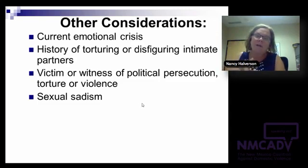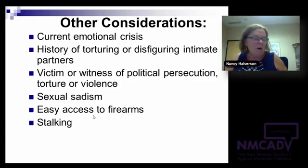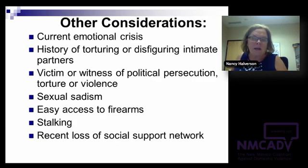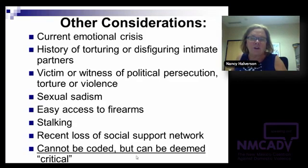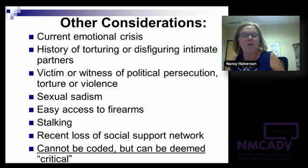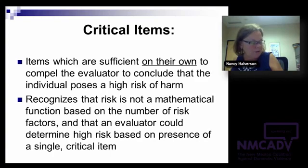The idea is that risk isn't just about the math — it's about the qualitative focus we put on these various risk factors. For scoring the SARA, each item is zero (absent), one (threshold), or two (present). The manual provided with the SARA is really helpful in figuring out whether items are sub-threshold or present. Then you determine the presence of additional considerations, define which are critical, and arrive at a score.